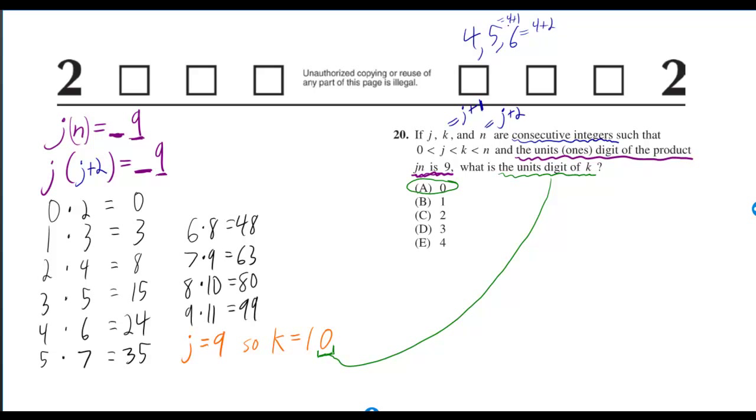Now 5 is equal to 4 plus 1, 6 is equal to 4 plus 2. So k is going to equal j plus 1 and n is going to equal j plus 2.